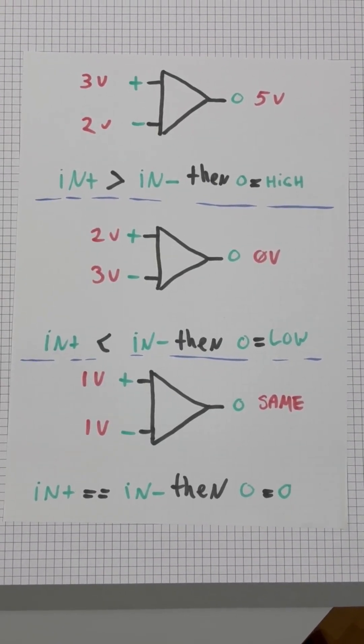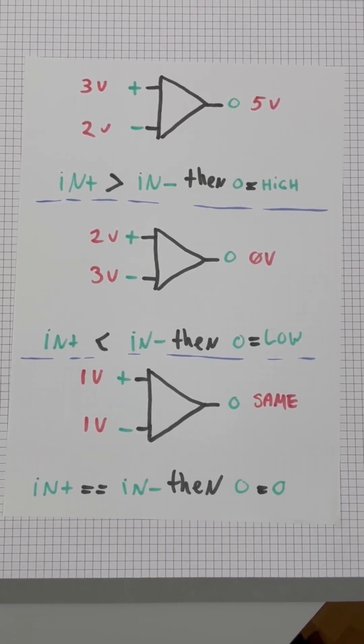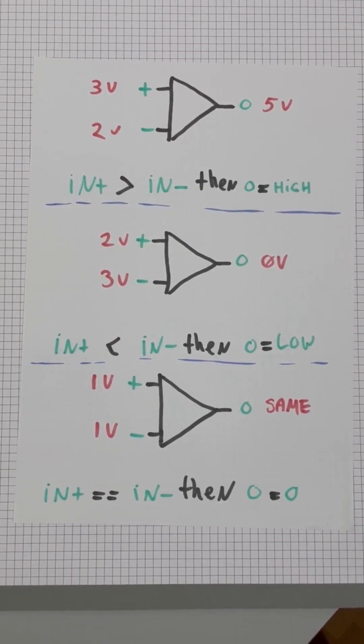When the voltage on the positive input is equal to the voltage on the negative input, the output remains the same.